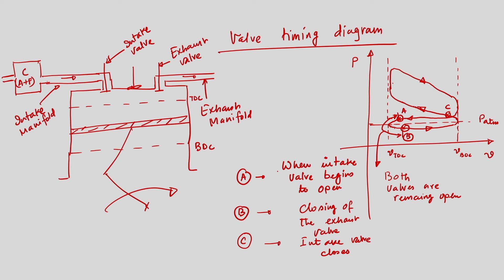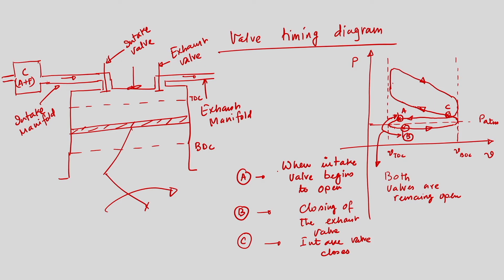Now both valves are closed — the intake valve is closed and the exhaust valve is also closed. The piston travels towards TDC and the compression process takes place. When the piston is very close to TDC, the spark plug is switched on — this is point D.